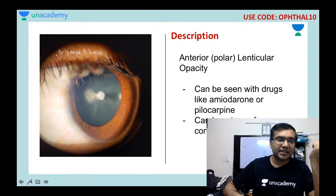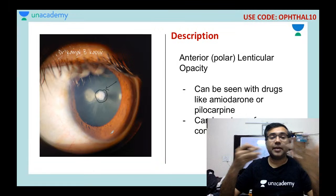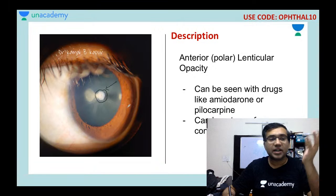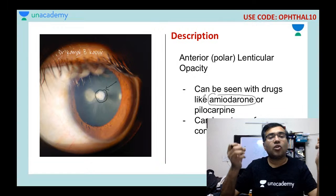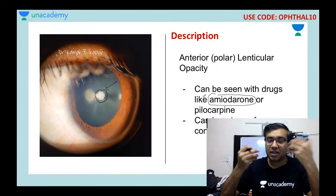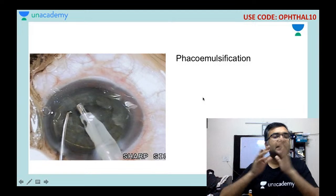Courtesy of Dr. Kamal sir, this image shows anterior lenticular opacities. These can occur after perforating trauma or as drug side effects — important culprits include amiodarone, pilocarpine, and ecothiopate. They can also be present from birth as a type of congenital cataract.